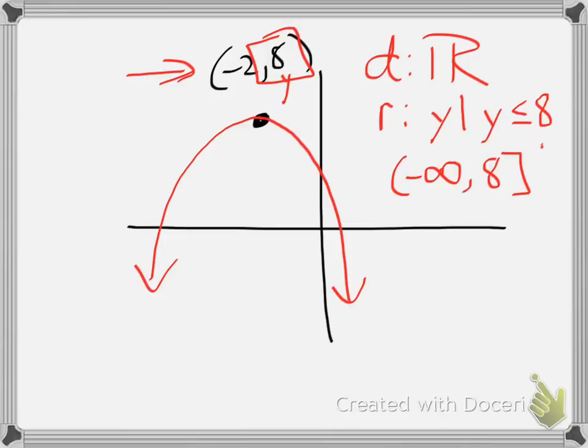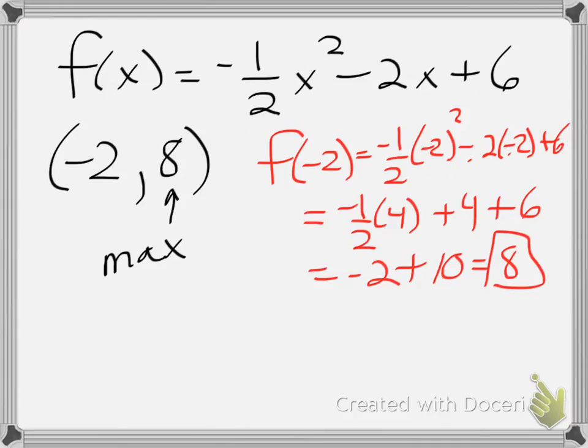So we have our domain, our range. We know that our maximum is actually 8, specifically the point negative 2, 8, for the function negative 1 half x squared minus 2x plus 6.